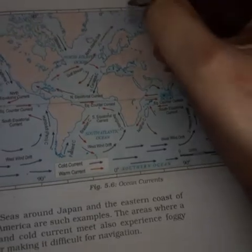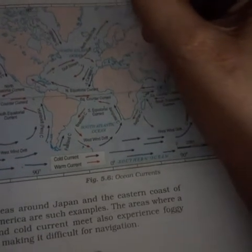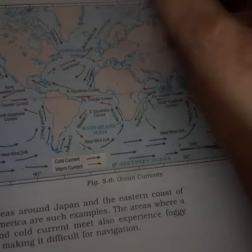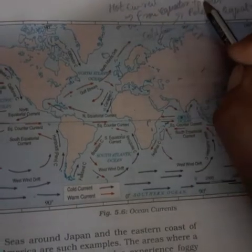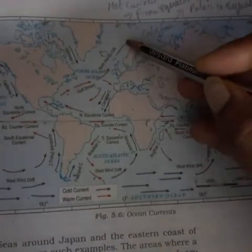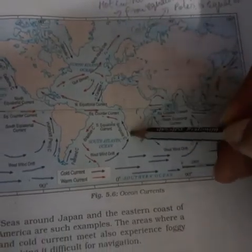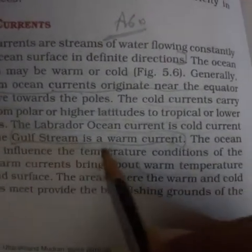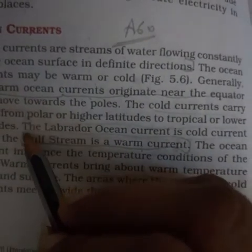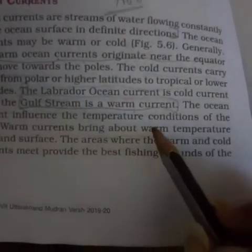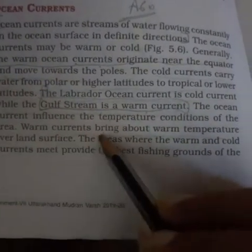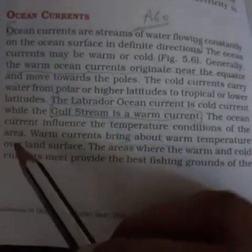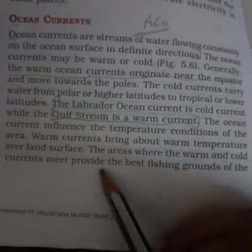Hot current waves travel from equator to poles, while cold current waves travel from poles to equator — that is why they are cold. The cold current is the Labrador Current, and the Gulf Stream is a warm current. These ocean currents decide the temperature of the entire area of the earth — warm currents make surrounding areas warm.